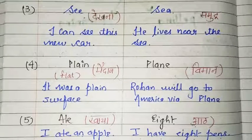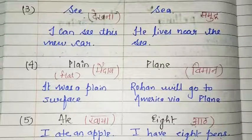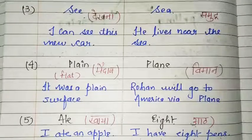Dear students, basically humne kya samjha? Aise words jinke sound pronunciation same hote hai, but unki spelling aur unka meaning different hota hai, unhe hum homophones kehte hai. Hope you all understood homophones well. Thanks for watching.